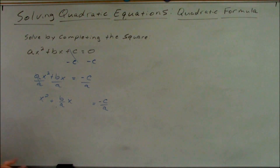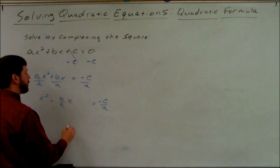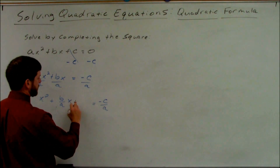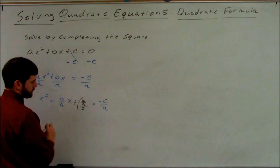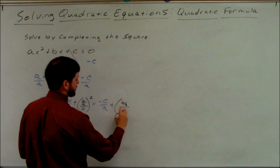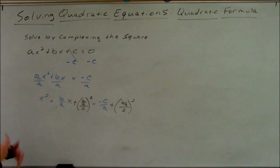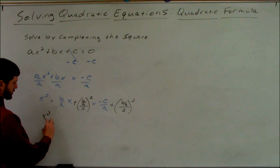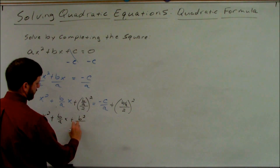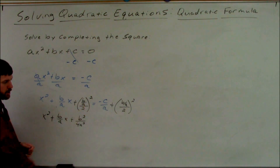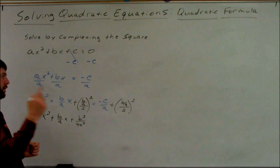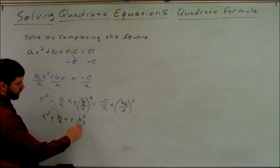Now we get to the actual completing the square step. That's where we add (b/2) squared. Well b is our coefficient on x after we have divided by our lead coefficient, so in this problem it's going to be (b/a)/2. This is my linear coefficient over 2, squared, plus (b/a)/2 squared. From there we go through and clean it up: x squared plus (b/a)x plus b squared over 4a squared, because that's going to be 2a. Divide by 2 means times one half, so b over a times 1 over 2 is b over 2a, squared is b squared over 4a squared.